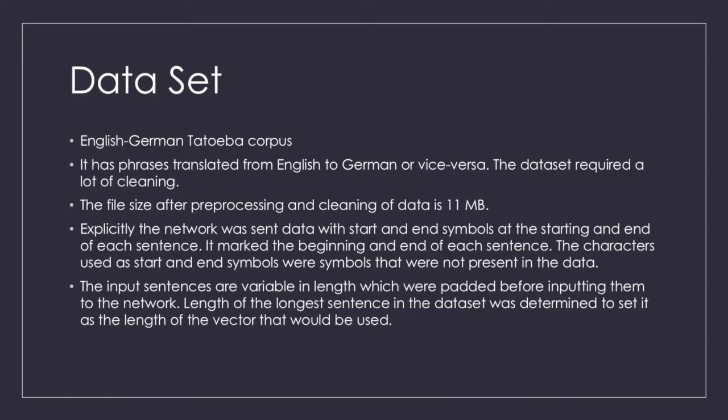Quascent data with start and end symbols at the starting and end of each sentence. It marked the beginning and end of each sentence. The characters used as start and end symbols were symbols that were not present in the data. The input sentences are variable in length which were padded before inputting them to the network. Length of the longest sentence in the dataset was determined to set it as the length of the vector that would be used.